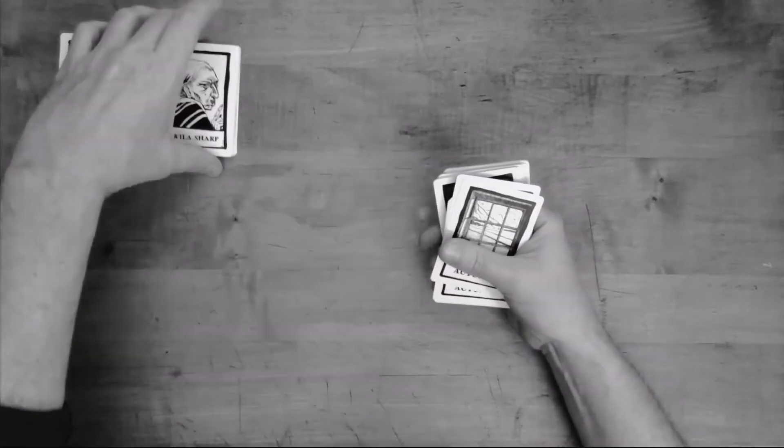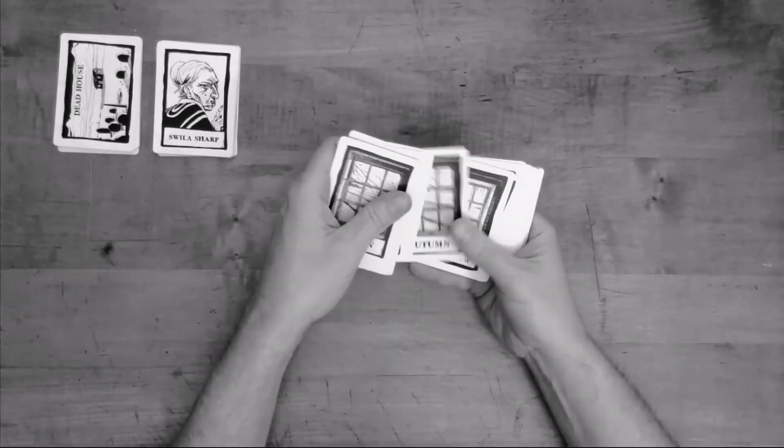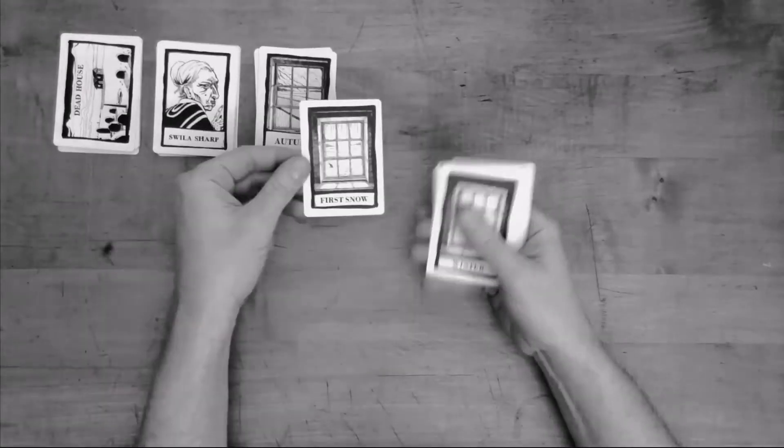And then you have a sort of timeline that begins with autumn. So we'll grab all the autumn cards here and those end in a special card called first snow and we'll just set that aside for now. We'll need it in a minute.